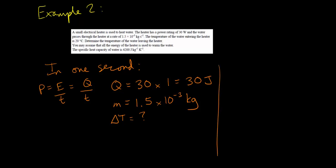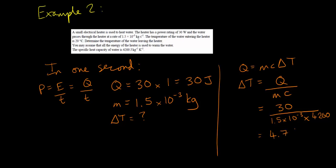So let's begin by using our equation Q equals MC delta T and rearranging that to find delta T, the change in temperature, which will give us Q divided by MC. Q here is 30 and our mass 1.5 times 10 to the minus 3, multiplied by the specific heat capacity, which given in the question was 4200 joules, gives us an answer for the delta T of 4.76 degrees Celsius or Kelvin.